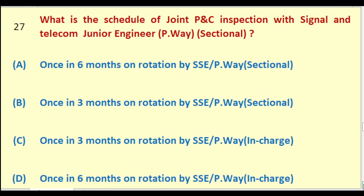What is the schedule of joint P&C inspection with Signal and Telecom by Junior Engineer Permanent Way Sectional? Options: once in six months on rotation by SSE PW Sectional; once in three months on rotation by SSE PW Sectional; once in three months on rotation by SSE PW in charge; once in six months on rotation by SSE PW in charge. The right answer is: once in three months on rotation by SSE Permanent Way in charge.